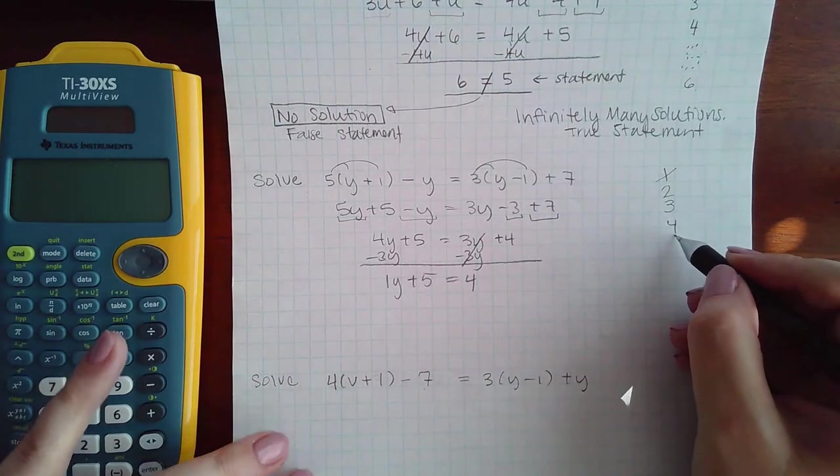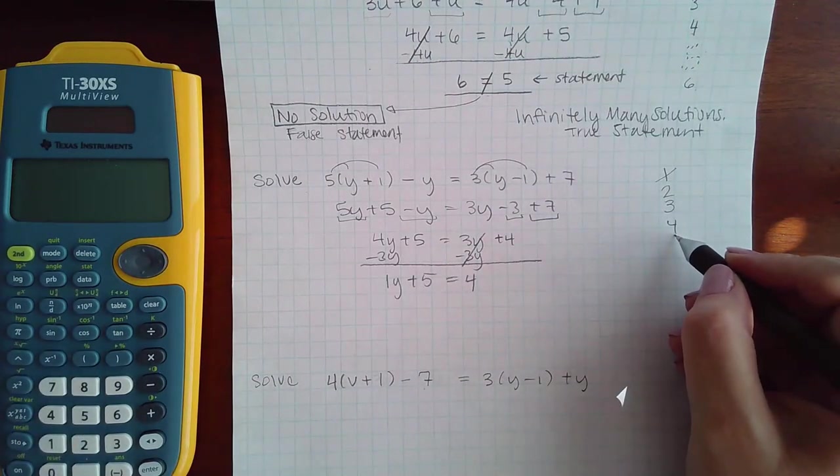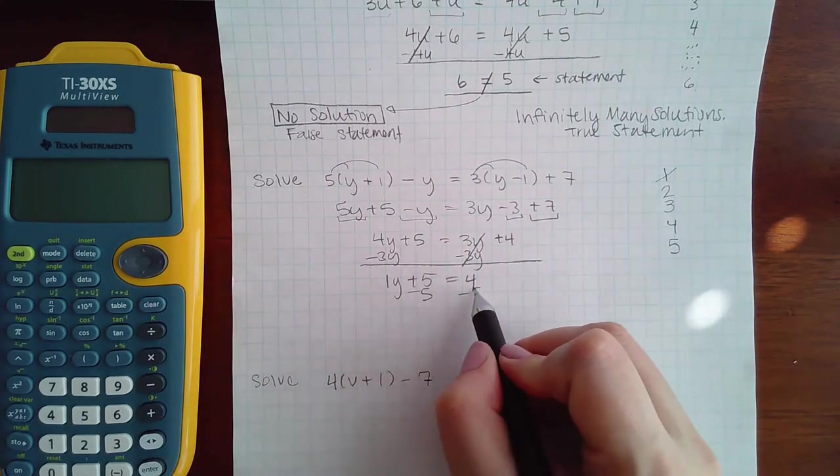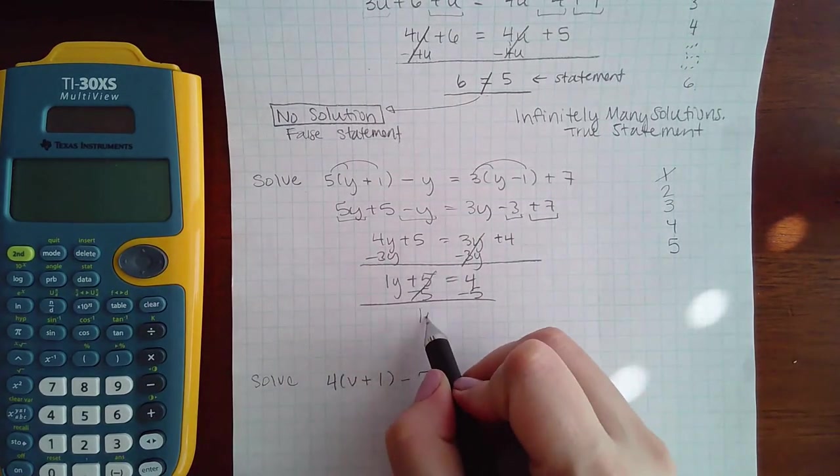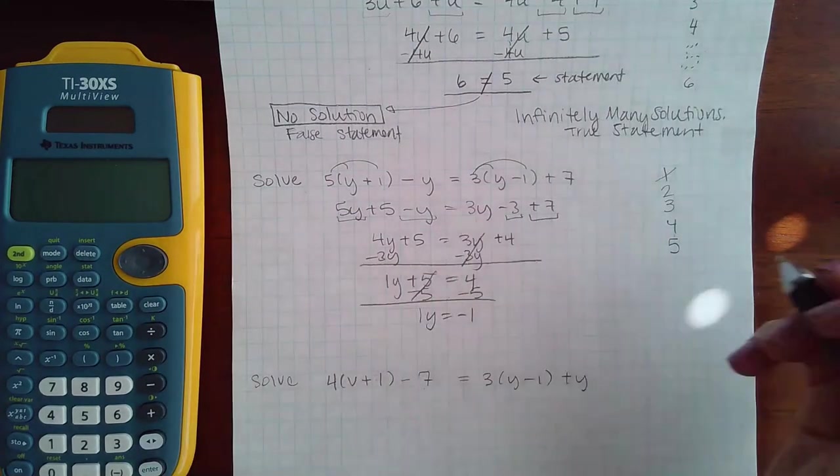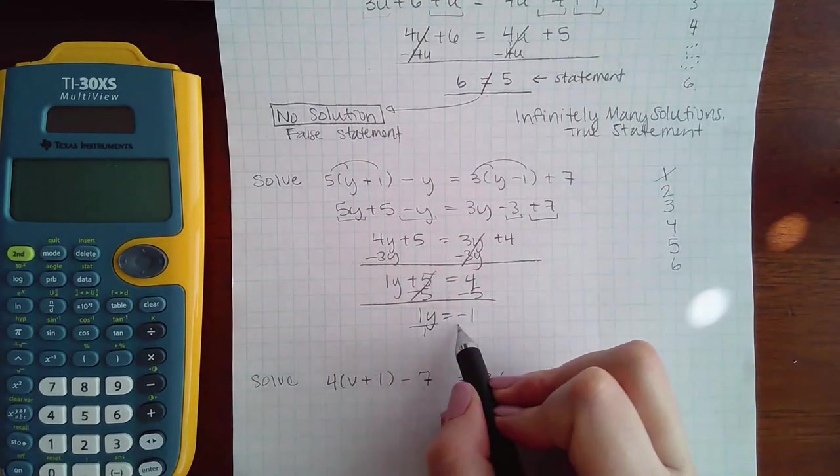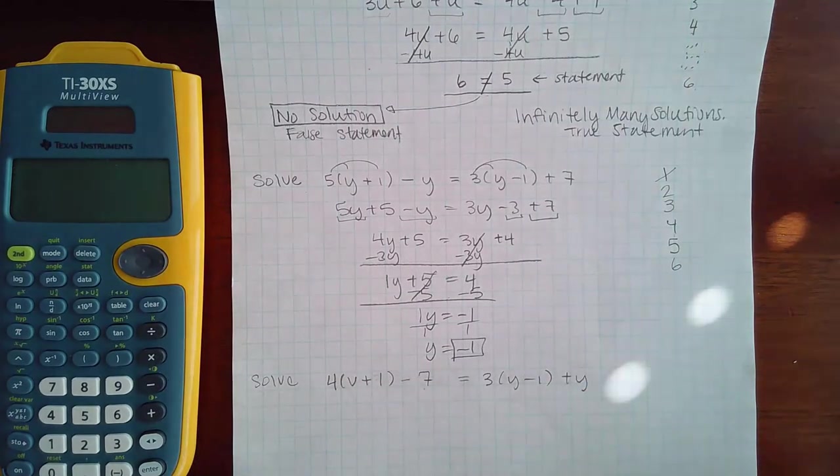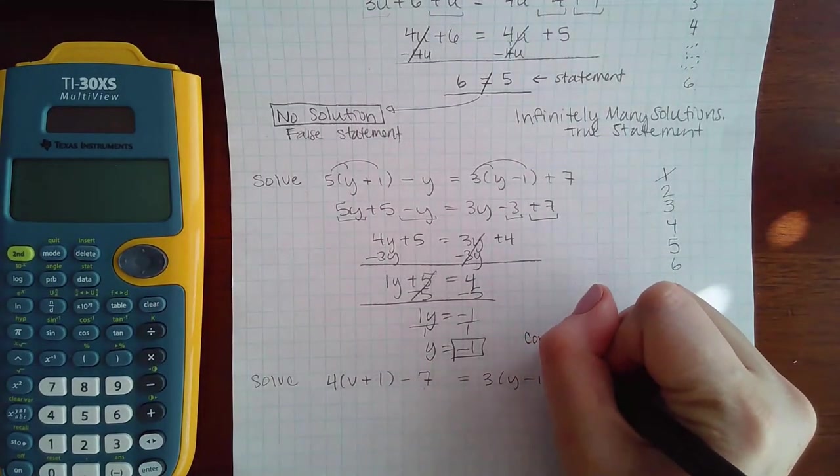Here, step four, nothing happened and I can't keep continuing. So step five is to move the constants to the other side. The variables did not wipe out in this particular case. Then step six, divide by your coefficient. I end up with negative 1 as the answer.